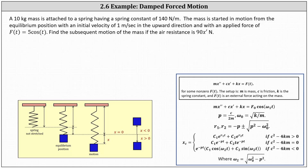Welcome to an example on damped forced motion. In this example, we'll be using the formulas we derived in our previous lesson. A 10 kilogram mass is attached to a spring having a spring constant of 140 newtons per meter. The mass is started in motion from the equilibrium position with an initial velocity of one meter per second in the upward direction, and with an applied force of F(t) equals five cosine t.